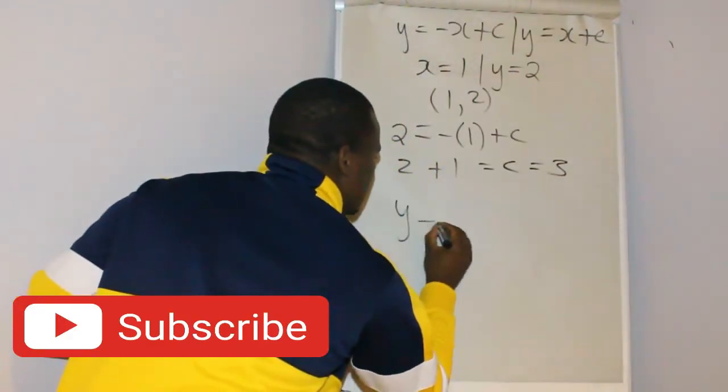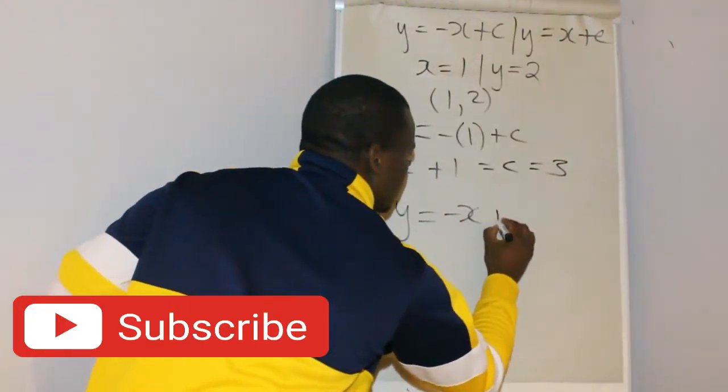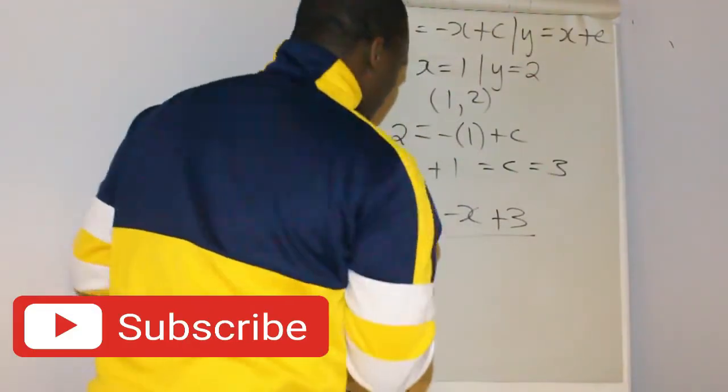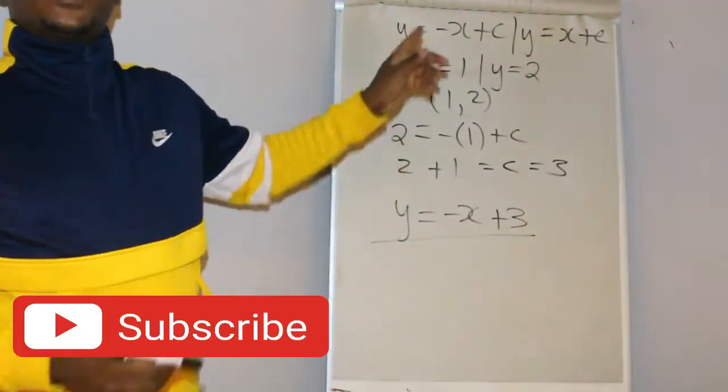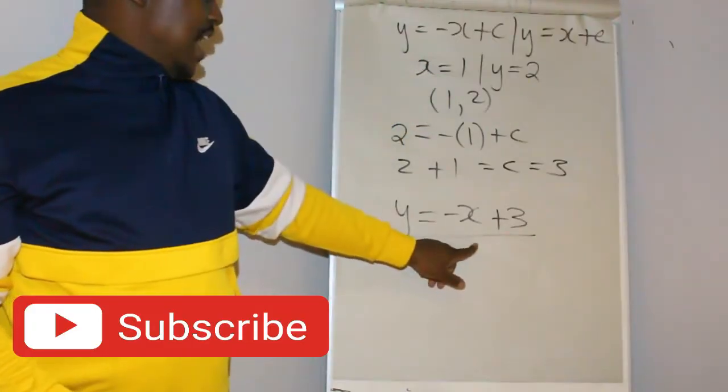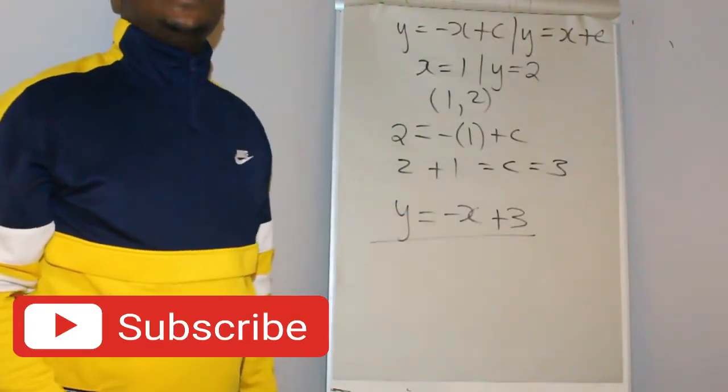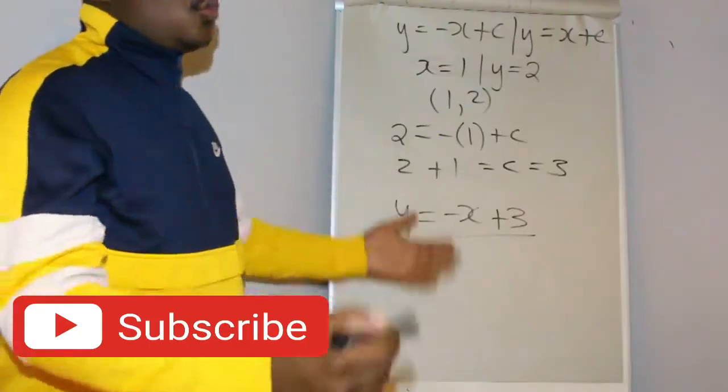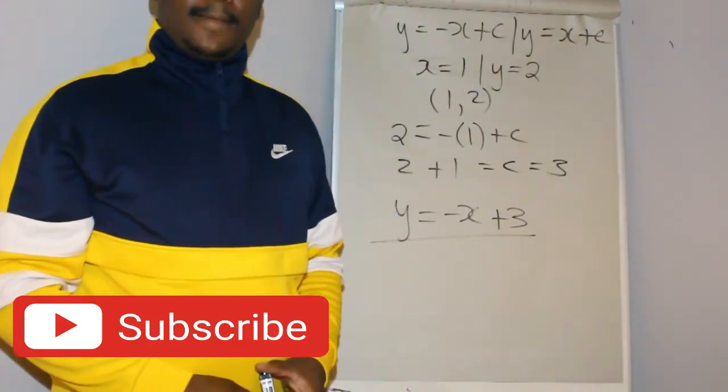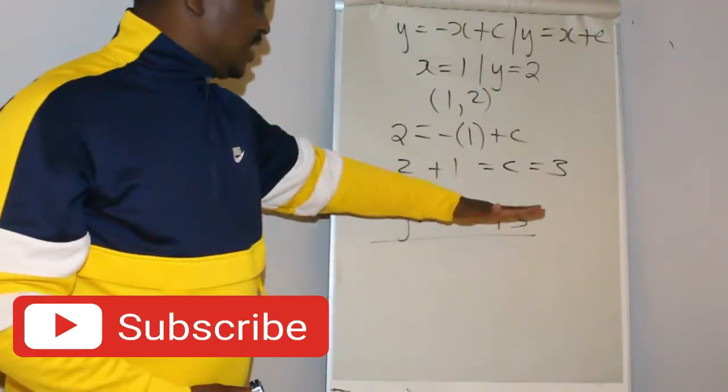Your line of symmetry is y equals negative x plus 3. So if you plot the function that you have, h, and plot this line, you will see that this line will split your graph into two identical parts. This is your line of symmetry.